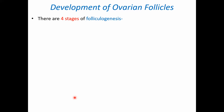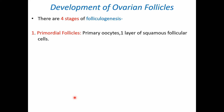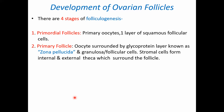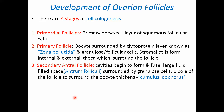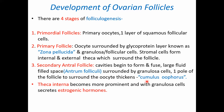The development of ovarian follicles involves four stages of folliculogenesis. First, primordial follicles: a primary oocyte with one layer of squamous follicular cells. Second, the primary follicle: the oocyte is surrounded by a glycoprotein layer known as zona pellucida and granulosa follicular cells. Stromal cells form the internal and external theca surrounding the follicle. Third, the secondary antral follicle: cavities form and fuse to create a large fluid space called the antrum folliculi, surrounded by granulosa cells.